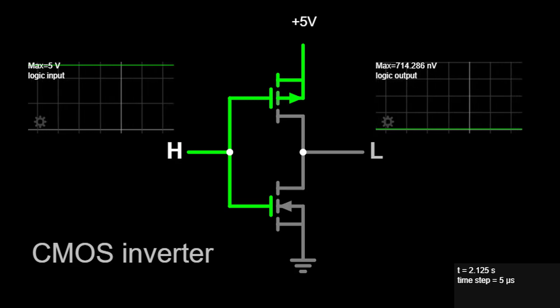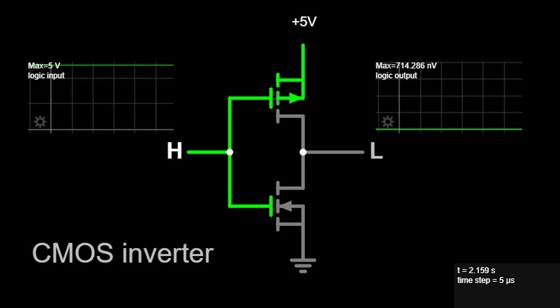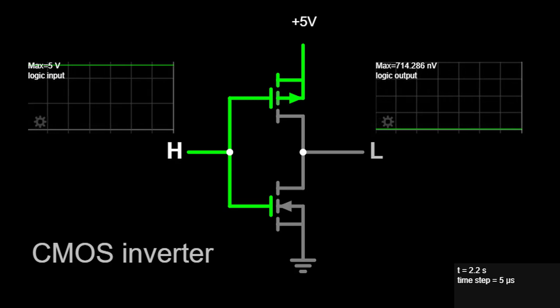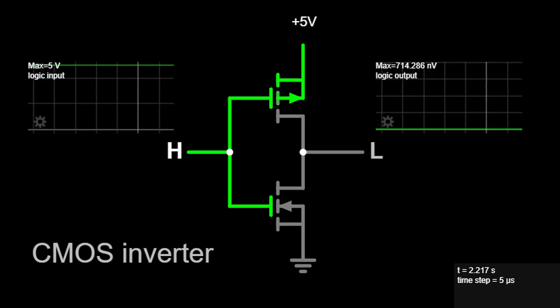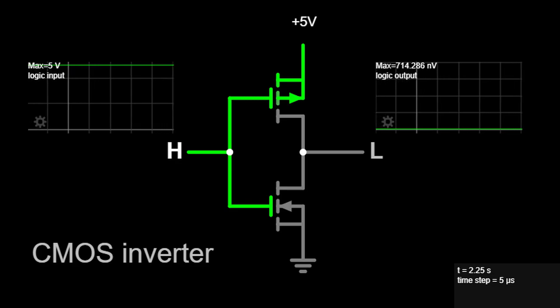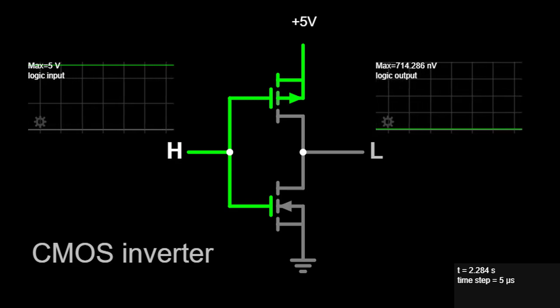4. Wide supply voltage range - CMOS inverters can operate over a wide range of supply voltages, making them versatile and adaptable to various system requirements. 5. Balanced driving capability - CMOS inverters offer balanced driving capability, allowing them to drive both high-capacitance loads and low-capacitance loads effectively.